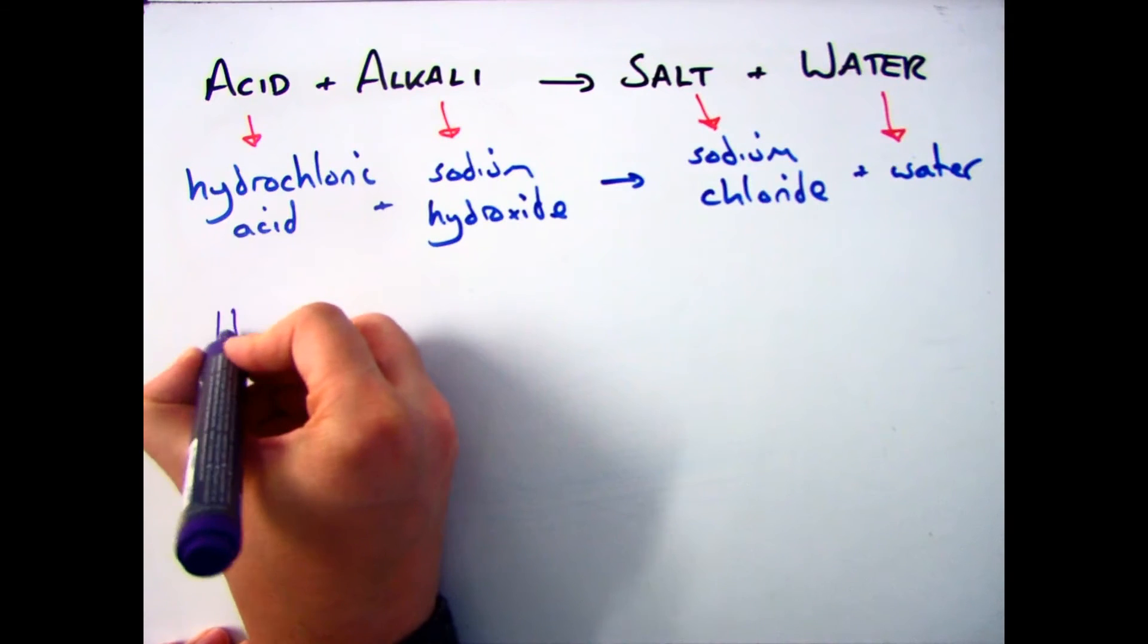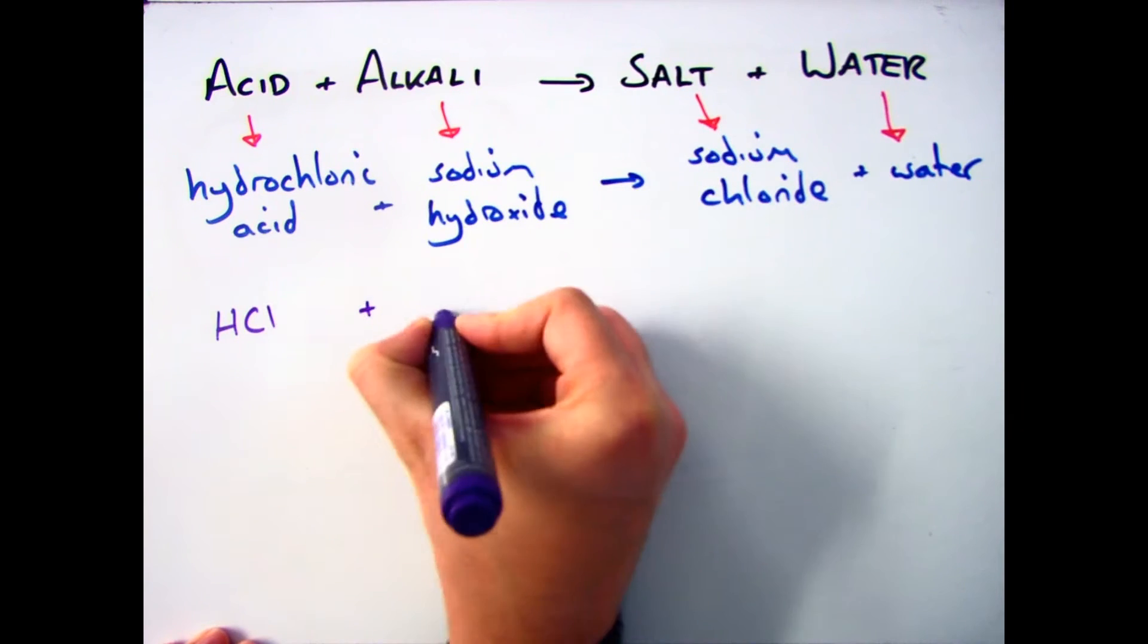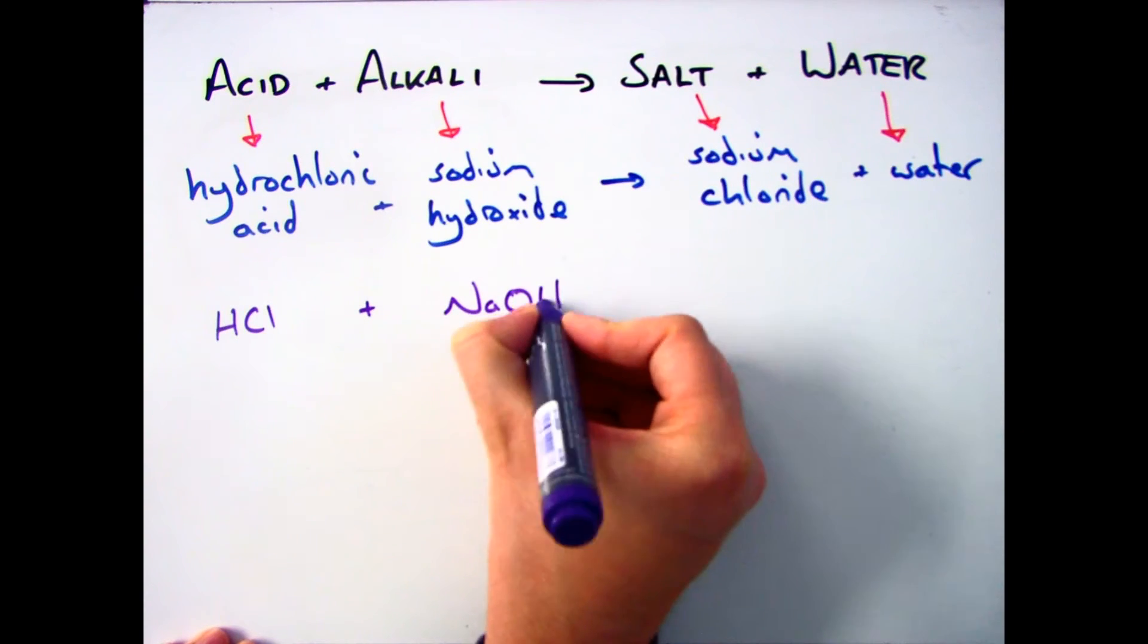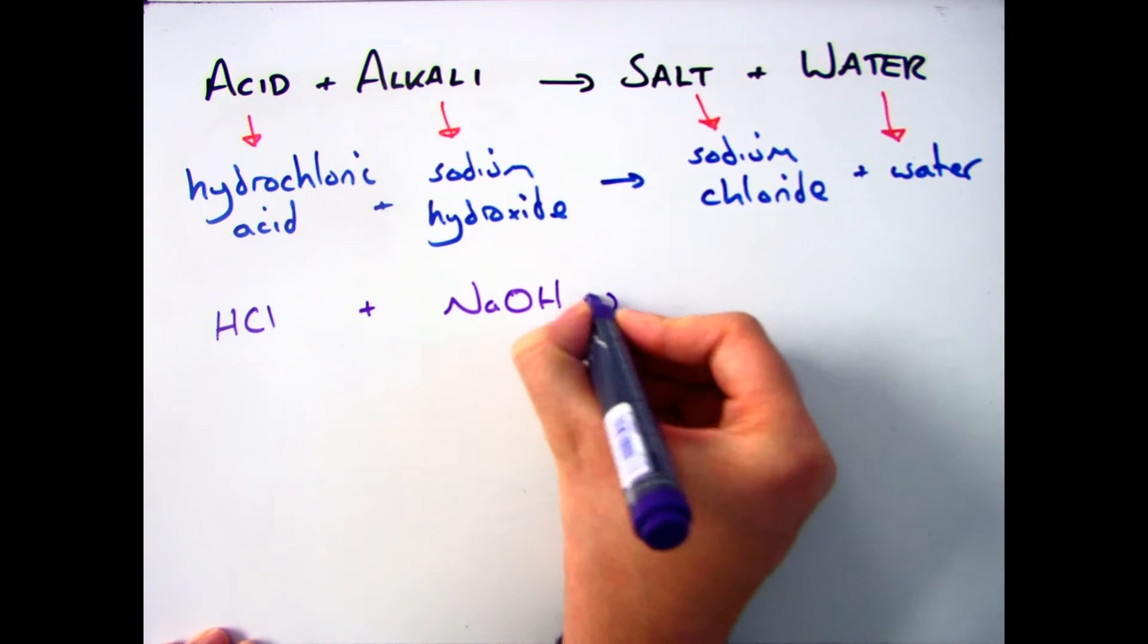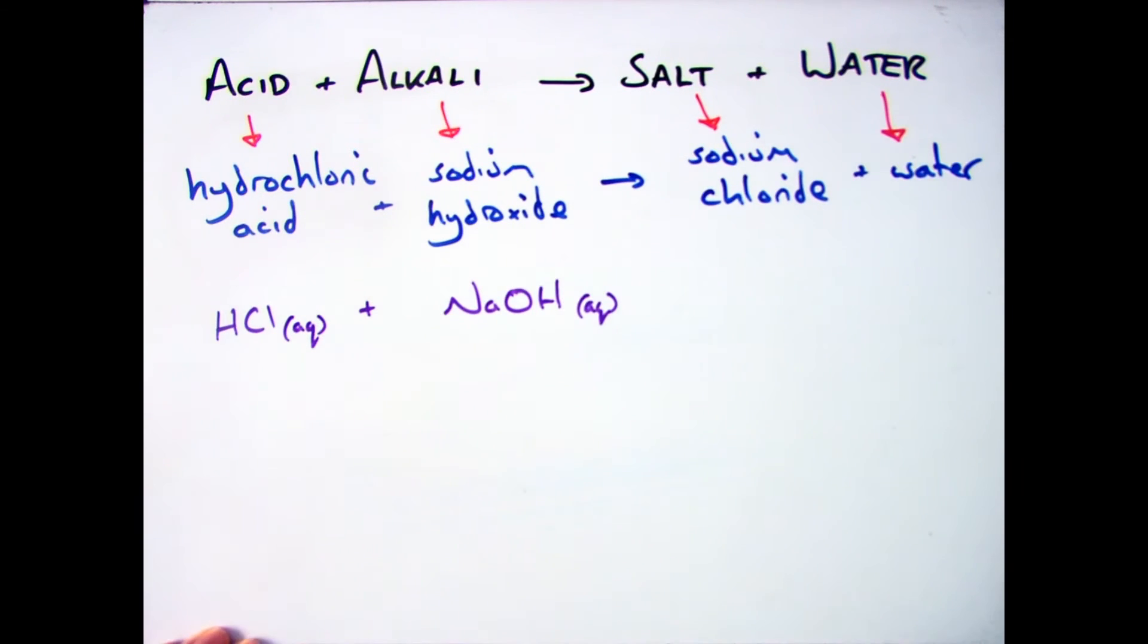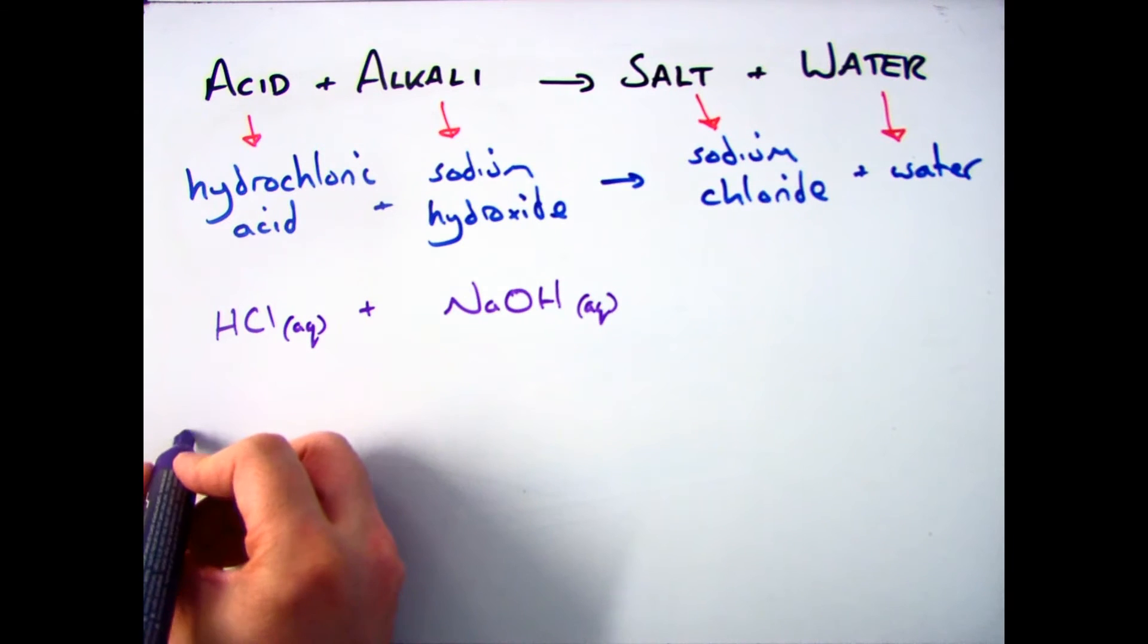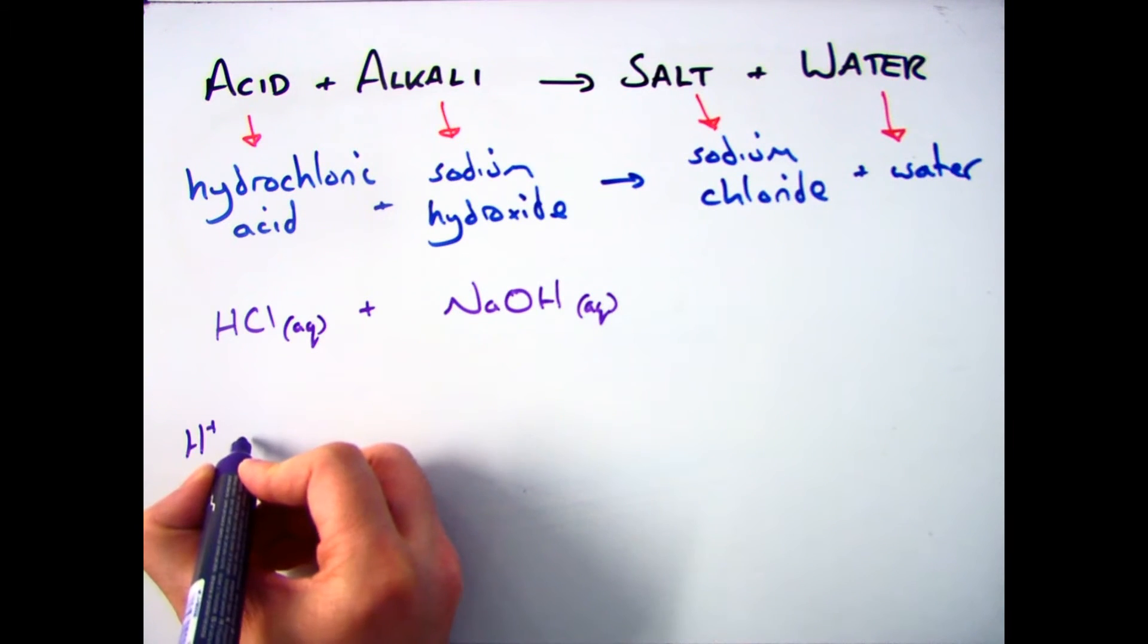If we have a look at the overall balanced equation for that then, you're starting off with HCl, you're reacting it with NaOH, hydrochloric acid plus sodium hydroxide. Both of which are aqueous, which means they are soluble. These react together to form your sodium chloride in water.